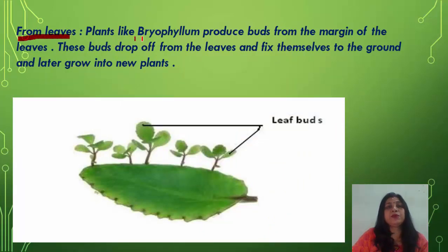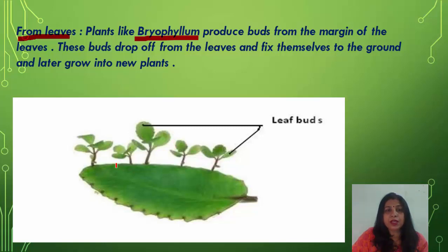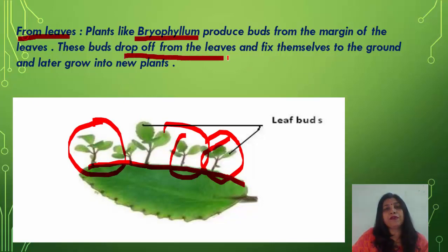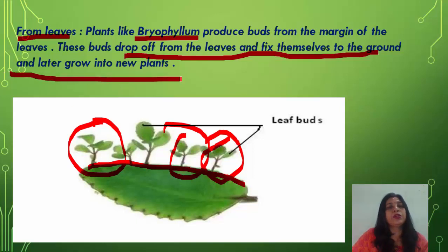Vegetative propagation from leaves: in some plants like Bryophyllum, buds are produced from the margins of the leaves. These buds drop off from the leaves, fix themselves to the ground, and later grow into a new plant.